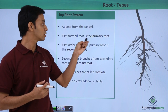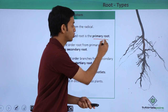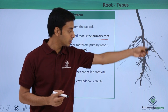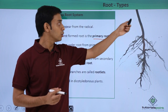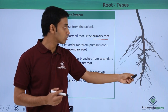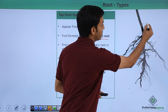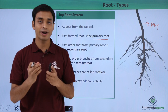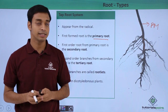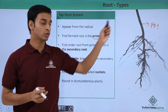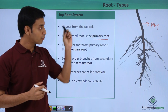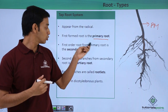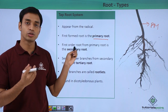The first root formed from the tap root system is known as the primary root. As you can see, this is a typical structure of a tap root. This cylindrical structure is known as the primary root, which arises directly from the radicle of a germinating seed.